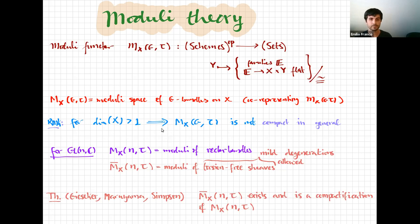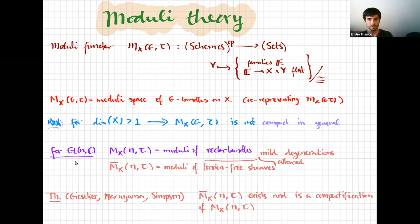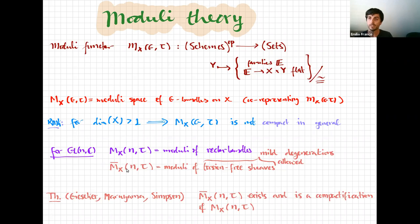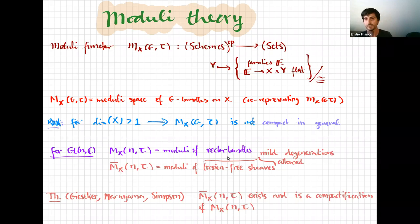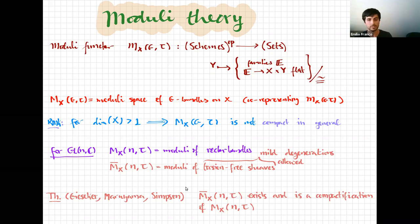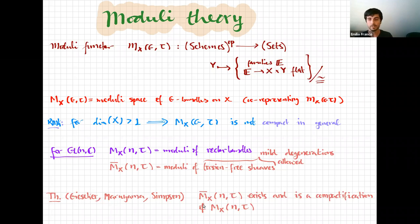When the base manifold has dimension higher than one, we must find a compactification to work with a compact or projective variety. In the case of GL(n,C), one approach to compactification is to study the moduli space of torsion-free sheaves over the base variety. Torsion-free sheaves can be understood as mild degenerations of vector bundles. It was proved by Gieseker, Maruyama, and Simpson that this moduli space exists and is indeed a compactification of the moduli space of vector bundles.